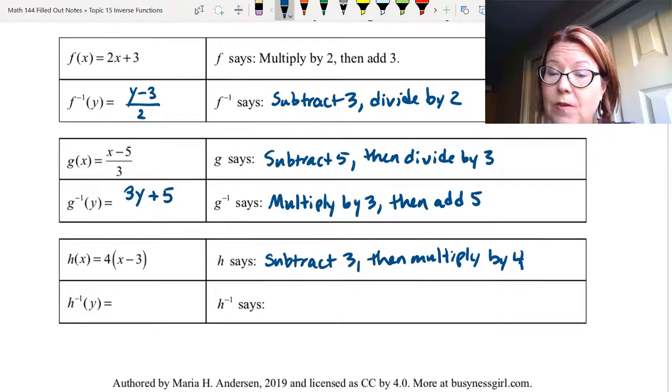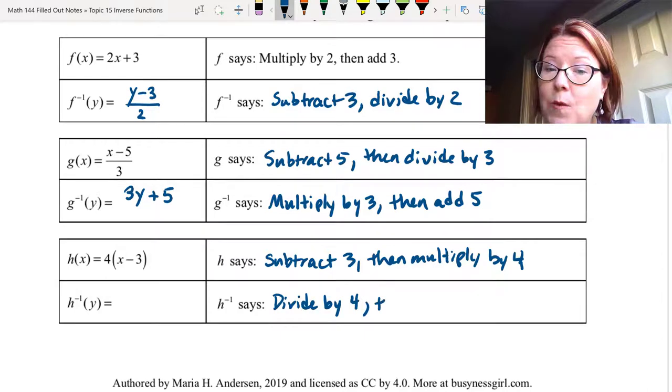To undo that, we first undo the multiplication by 4. So divide by 4, then we undo subtract 3, which means we add 3.